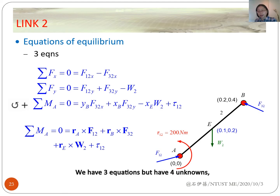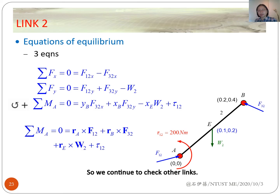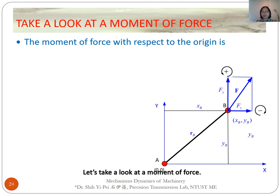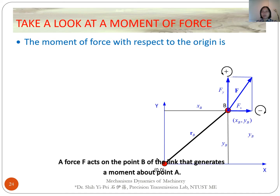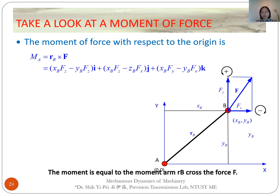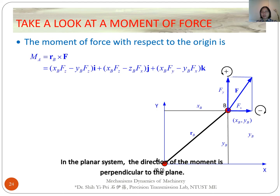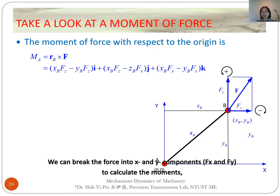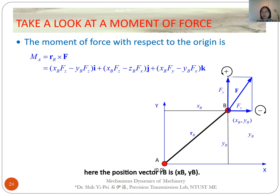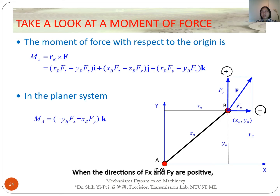Now we have three equations but four unknowns, so this system cannot be solved. We continue to check other links. Regarding the moment of a force: a force F acting on point B of the link generates a moment about point A equal to the position vector Rb cross the force F. In the planar system, the direction of the moment is perpendicular to the plane. We can decompose the force into X and Y components Fx and Fy. With position vector Rb equal to (Xb, Yb), the moment is the sum of negative Yb times Fx and Xb times Fy.